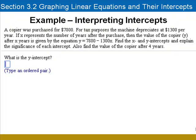Here we'll take a look at interpreting intercepts in a real-world situation. The copier was purchased for $7,800. For tax purposes, the machine depreciates at $1,300 per year. If x represents the number of years after the purchase, then the value of the copier y is given by the equation y equals 7,800 minus 1,300x.